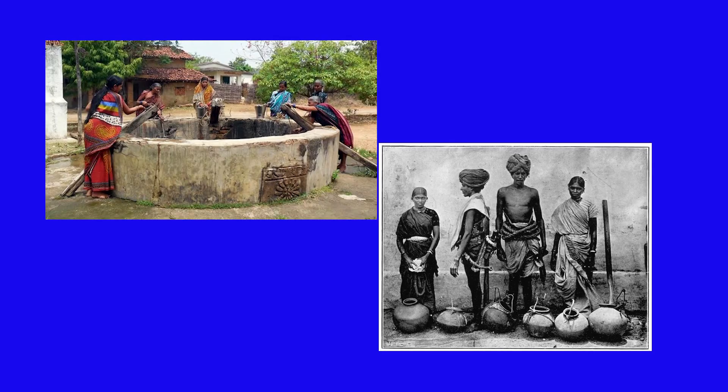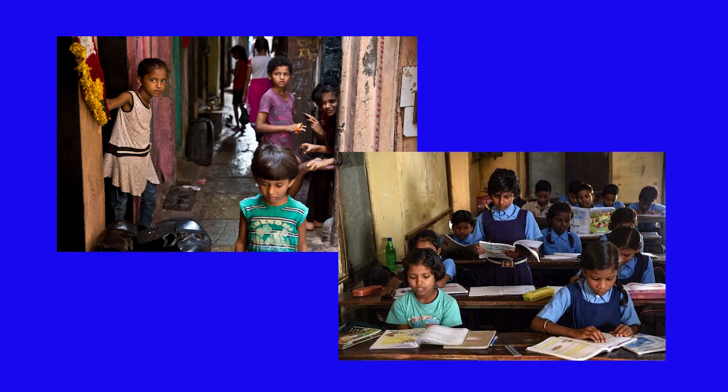They were not allowed basic facilities like access to clean drinking water. They were disallowed from accessing water from wells which the higher castes were drawing water from. They did not have facilities for going to school. Even their sight was seen as polluting, so much so that if a higher caste person came across a depressed class member, he would have to go through ritual cleansing.